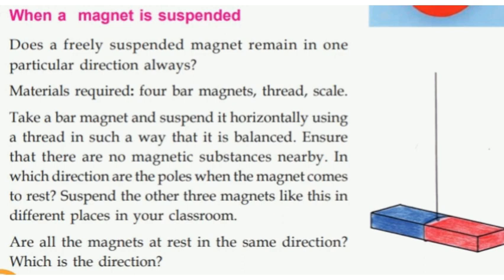This experiment requires four bar magnets, thread, and a scale. We will use 4 bar magnets and a scale. Take a bar magnet and suspend it horizontally using a thread in such a way that it is balanced.